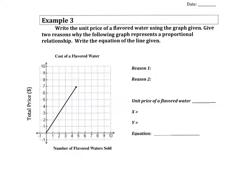I absolutely love problems like example 3, and I'm sure your other teachers would say the same. They're very fun. You're given a graph that describes the situation. It's good to look at a graph and see what the labels are, what you're looking at. So the title says it's the cost of a flavored water. On your y-axis, it's the total price of the purchase. And then on your x-axis is actually how many flavored waters were sold. And the question asks, write the unit price of a flavored water using the graph given. Give two reasons why the following graph represents a proportional relationship. Write the equation of the line given. So there's a lot going on here.